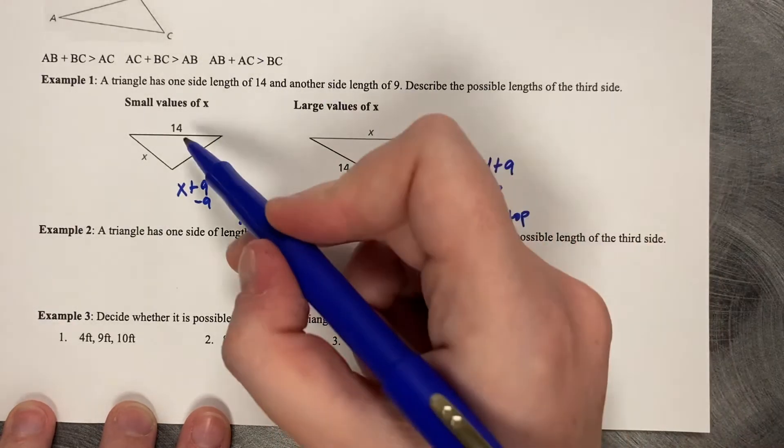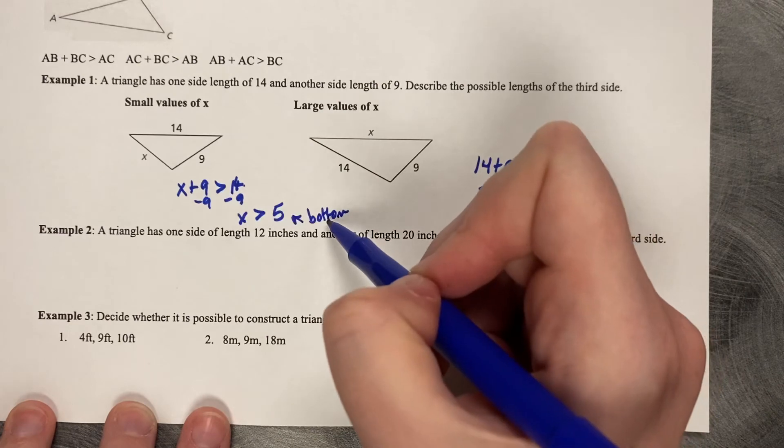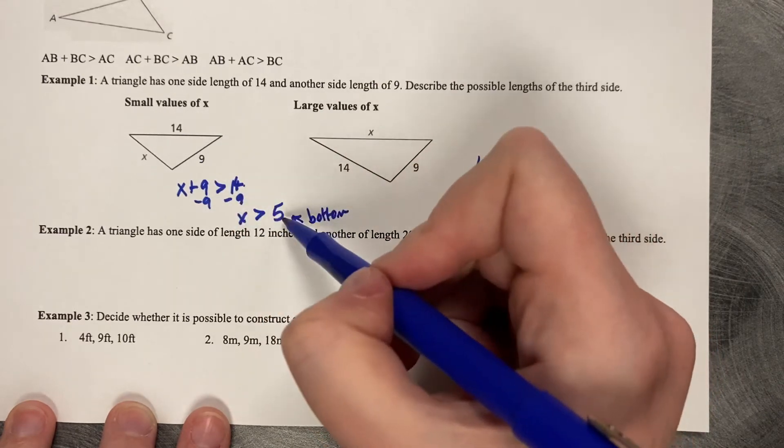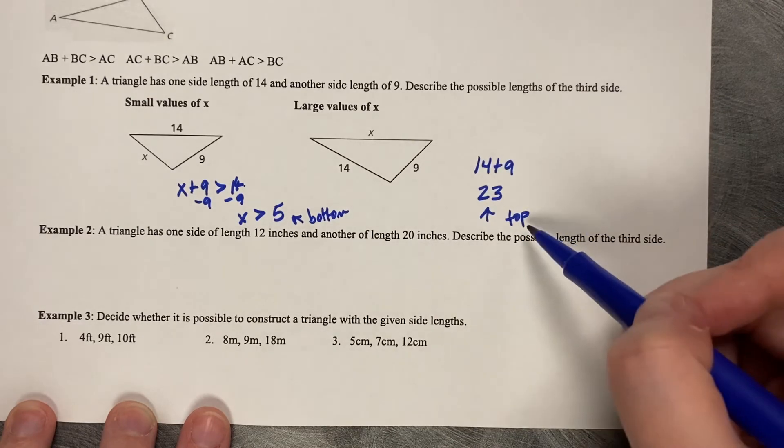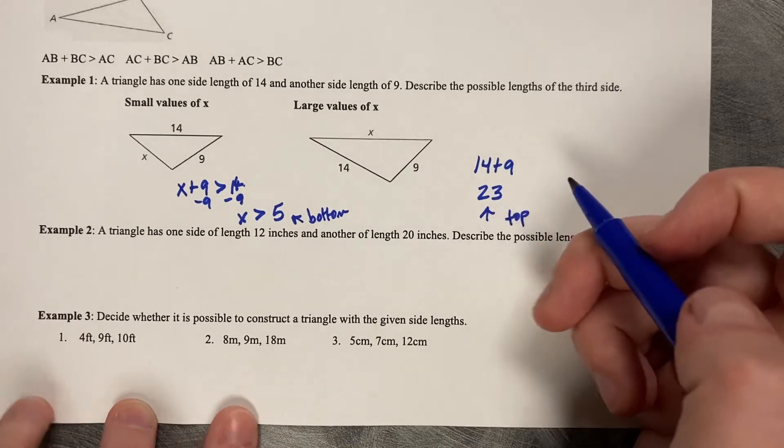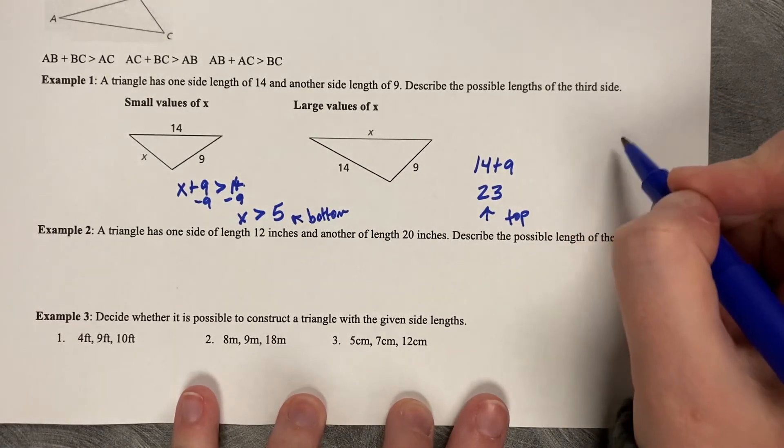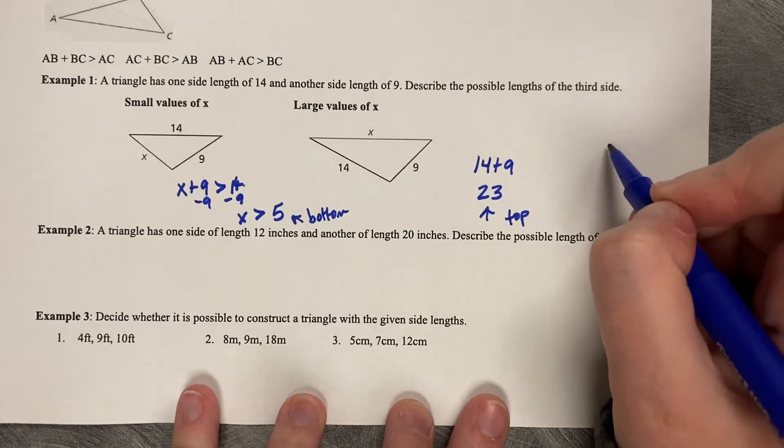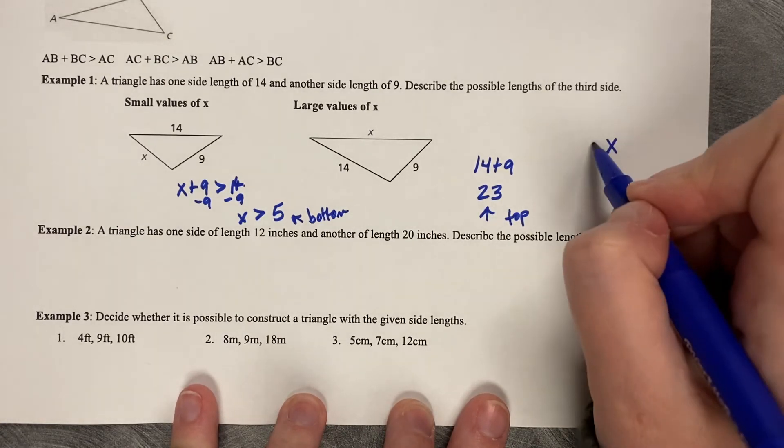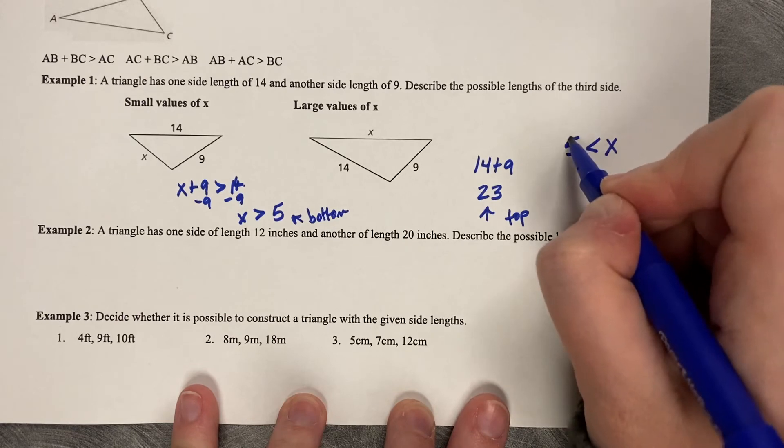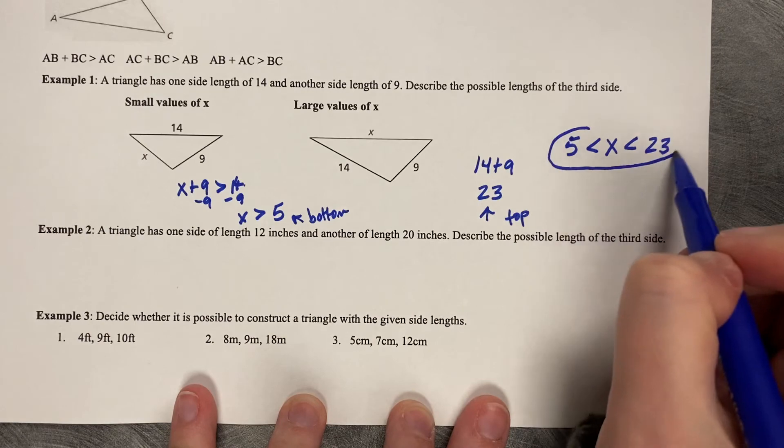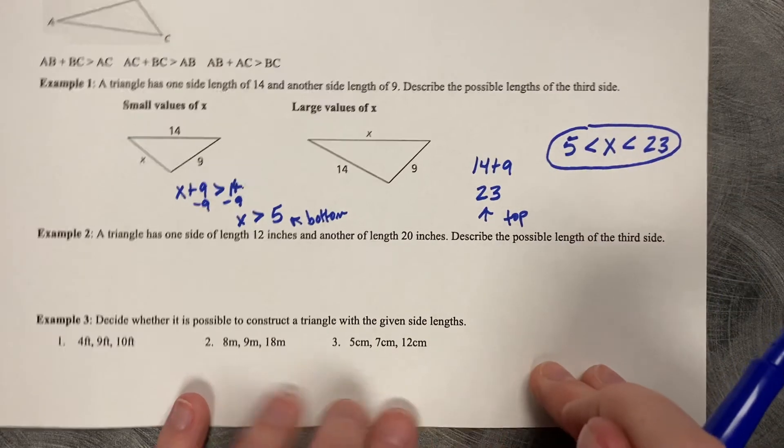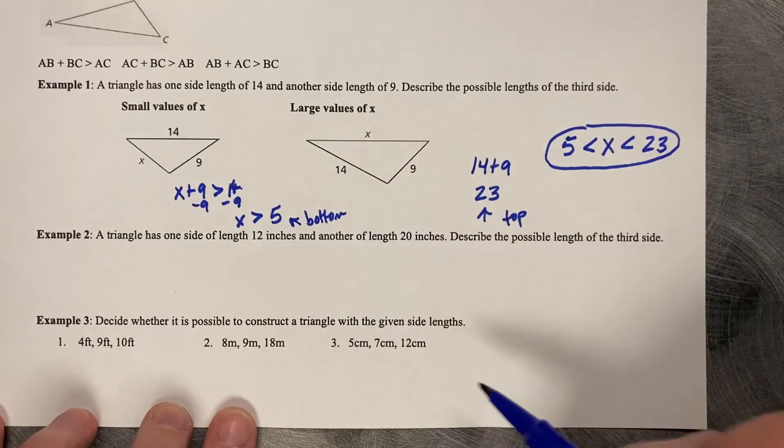But if I say that x is greater than 5, then 5 is our bottom number. So the easiest way to do it is to subtract your two side lengths to get your bottom, 14 minus 9 to get 5, and then add your two side lengths to get your top value, 14 plus 9 to get 23. So the final thing that you need to do is write it as an inequality statement. So x needs to be greater than 5 but less than 23. So any numbers inside of that range will make this a true triangle.